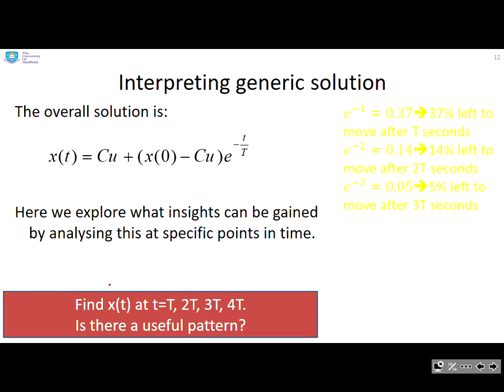So interpreting the generic solution. So we've written the overall solution here: cu plus x(0) minus cu times e to the minus time over time constant. And we want to say, is there something more we can do? Can we interpret this a bit more precisely? So we're going to recommend, look specifically at these time instances: one time constant, two time constant, three time constant. I'm not going to do four time constant because of space, but you should do that in your own time.